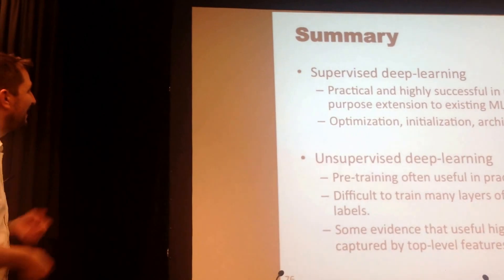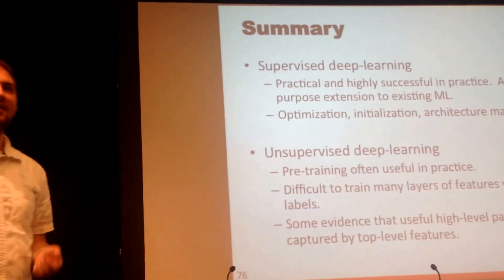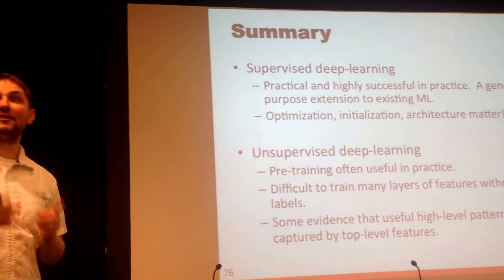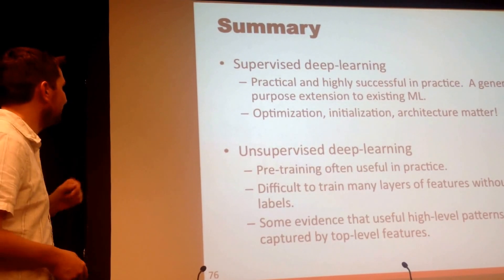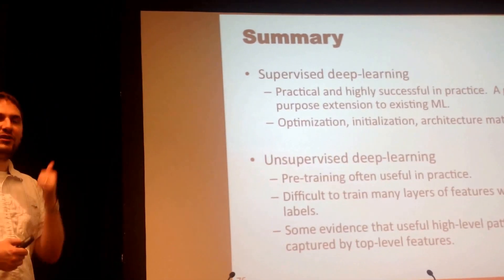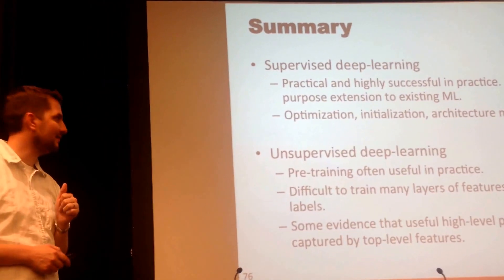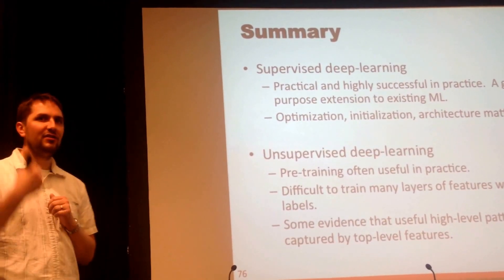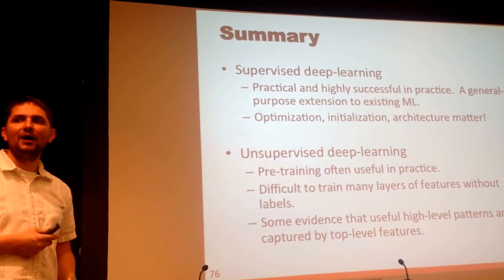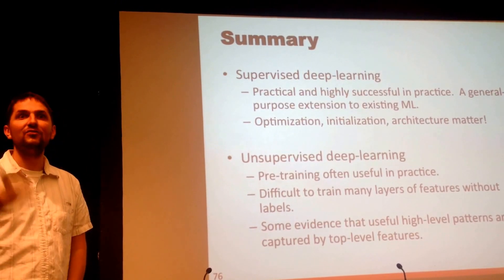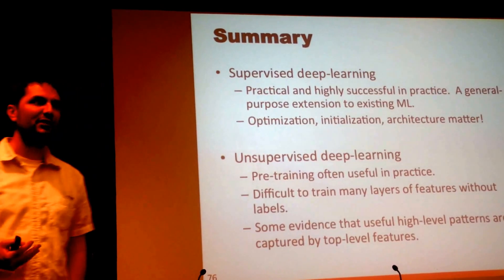Basic summary: supervised deep learning — if you've got a whole bunch of data and just want to make quick progress — actually works really great. We've got a lot of good tools and lots of people you can talk to to get this working. Unsupervised deep learning: pre-training is a pretty cool trick that actually seems to help in practice. But how to get really useful high-level features without any labeled data — that's still an interesting open problem. How does the brain do that? That's sort of interesting stuff, and if you're interested in deep learning research, that's a pretty neat area.